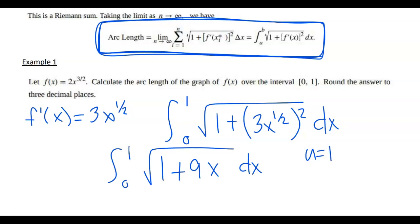So u equals 1 plus 9x, which means du equals 9 dx. When x equals 0, u equals 1. And when x equals 1, u equals 10.